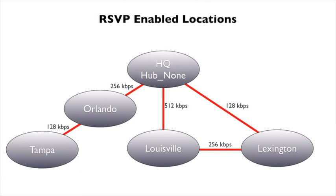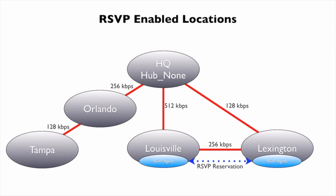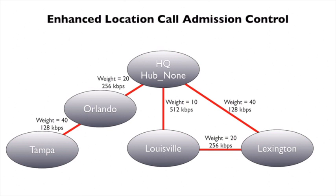Things got a lot better with RSVP-enabled locations. With RSVP-enabled locations, we would have routers at each site configured as RSVP agents. When a call is placed between two sites, Communications Manager would tell the routers to set up an RSVP reservation. If they can reserve enough bandwidth for the call, the call can go through using the direct link without deducting bandwidth from the spokes going back to HQ. But that still didn't solve the problem of leaf sites like Tampa, which has to go through Orlando and use some of Orlando's bandwidth to get back to HQ.